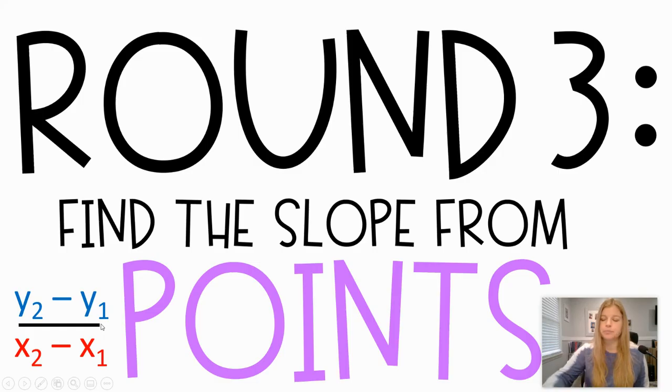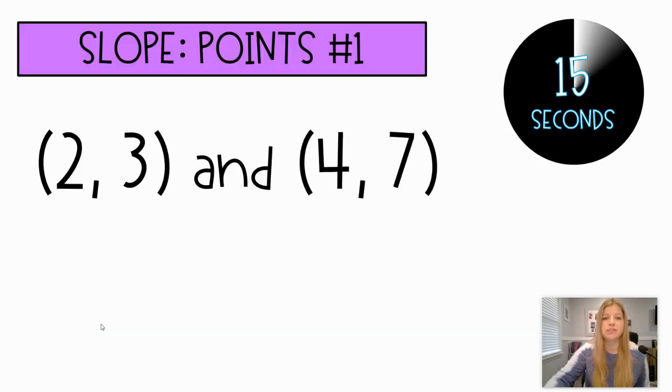It's the change in y over the change in x. Basically doing the same exact thing, guys. If you are finding slope from a table, a graph, or ordered pairs, it's the change in y over the change in x every single time. So you actually have 15 seconds for this one.